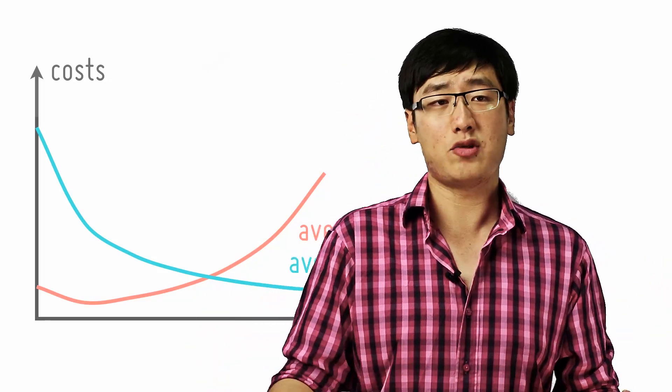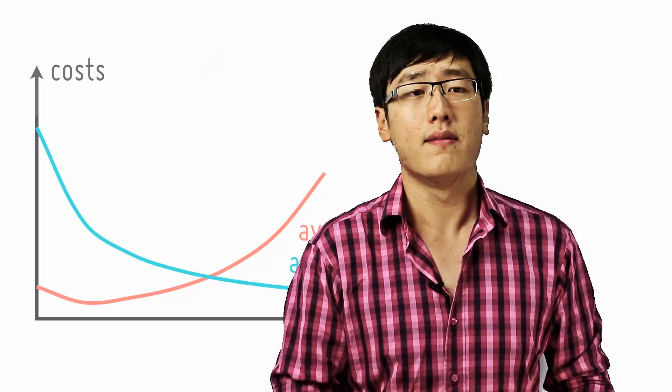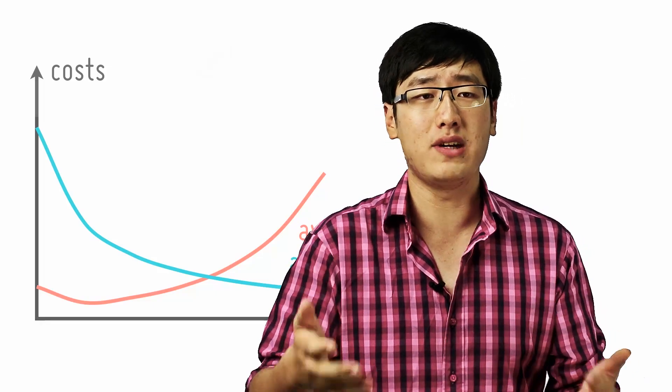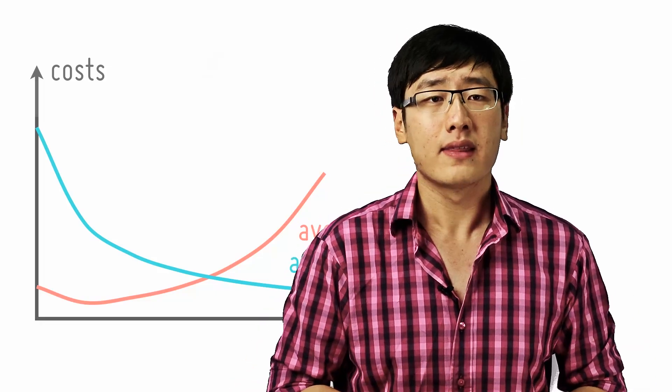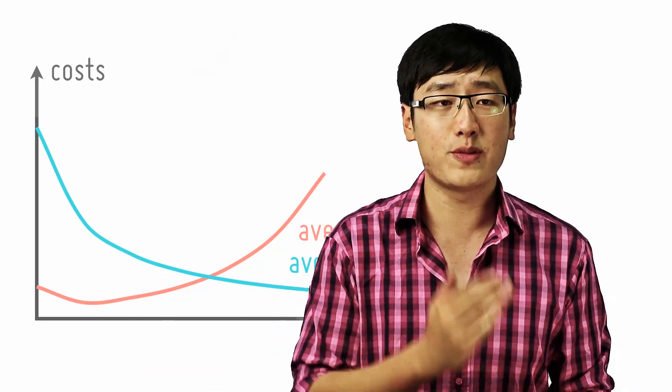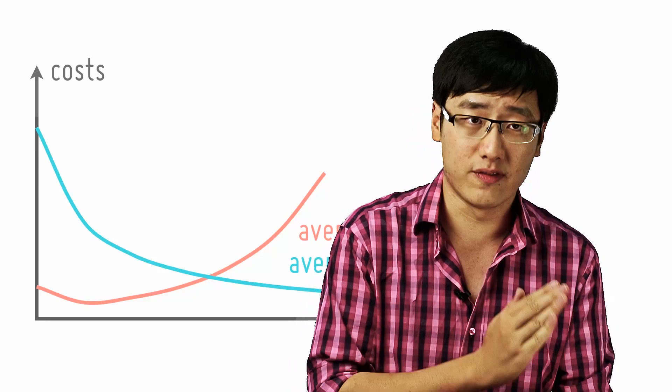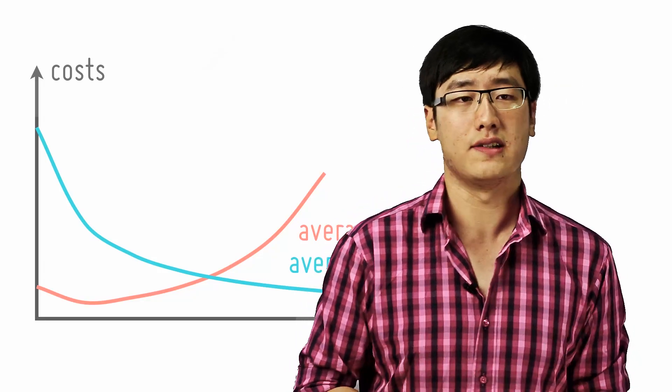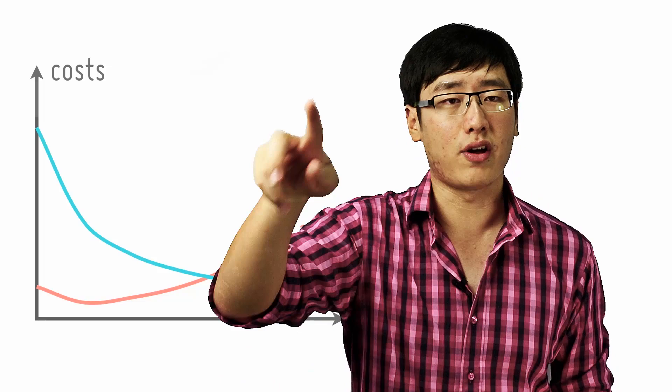So the cost of one iPad would be, if you can produce 20 iPads, it would be $200 of the cost of one iPad because it's salary divided by the number of iPads. So hence, once diminishing returns set in, he produces less and the average product decreases, the average variable cost or the AVC increases. Hence the U shape for your AVC.